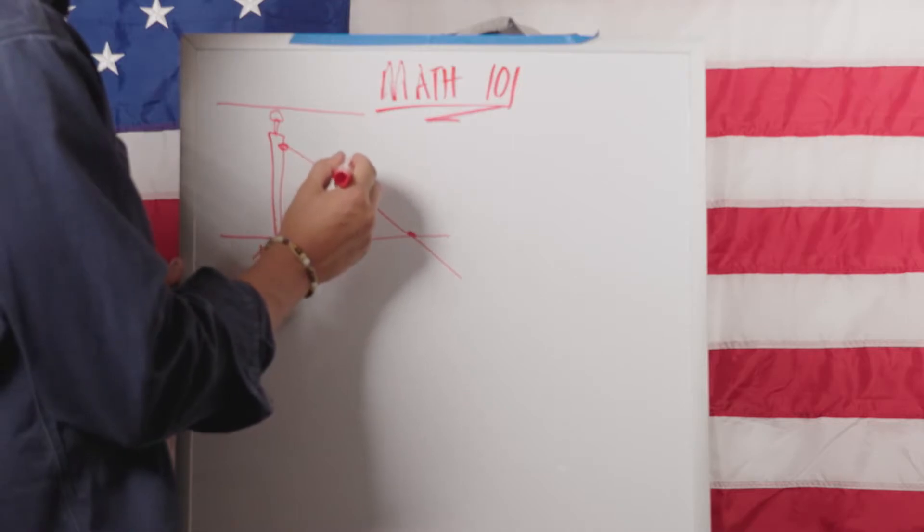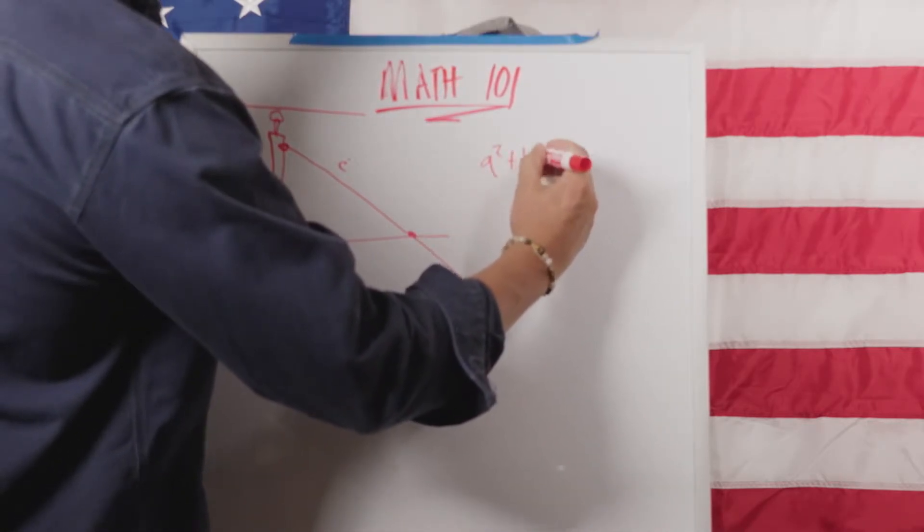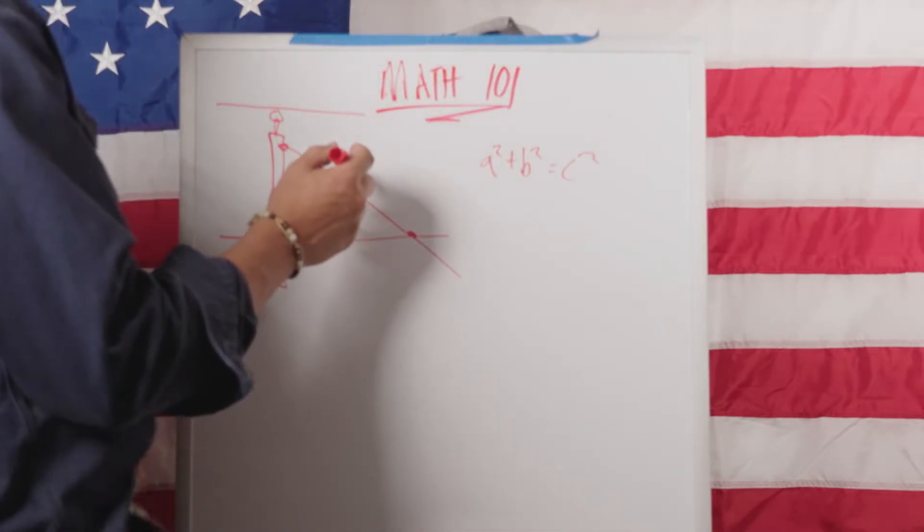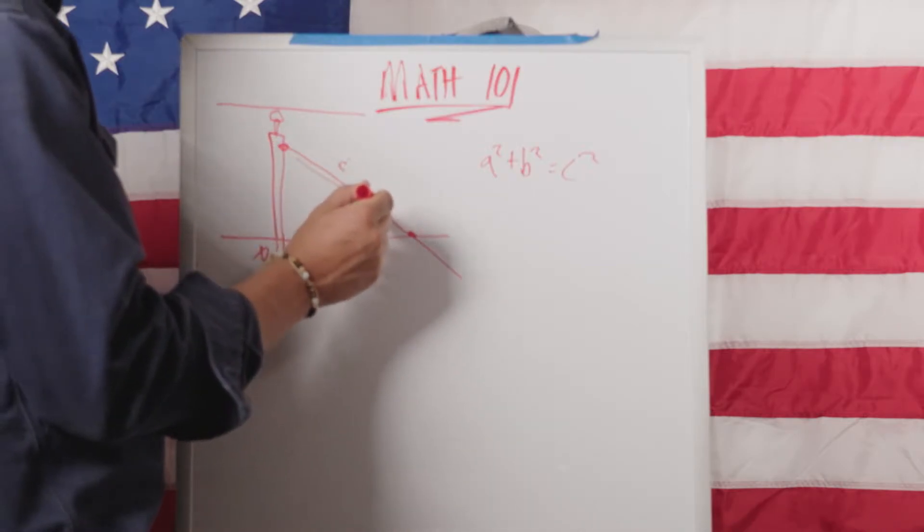So we'll make this C. So remember that the equation is a² + b² = c², right? So our missing value is going to be C because we don't know how long the guy needs to be.